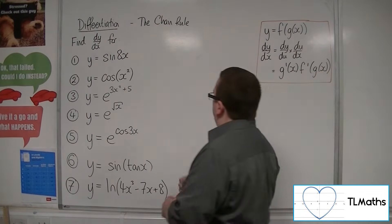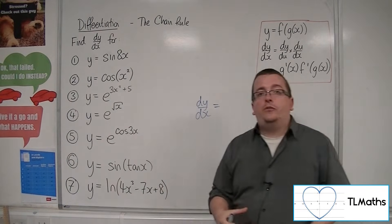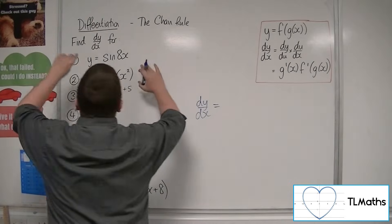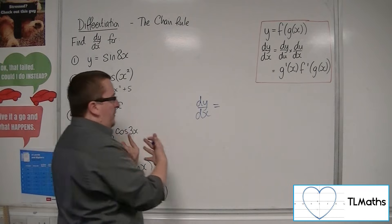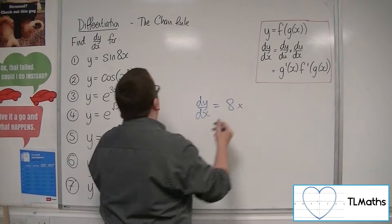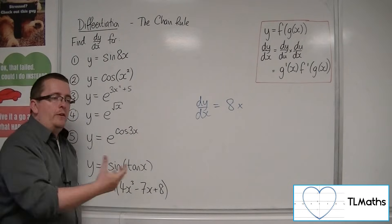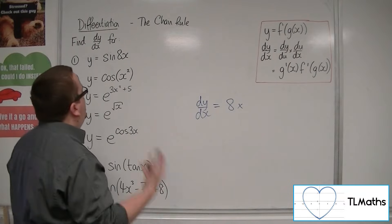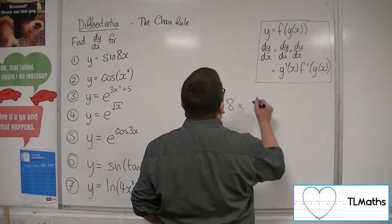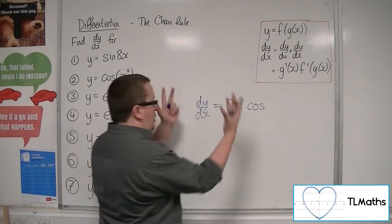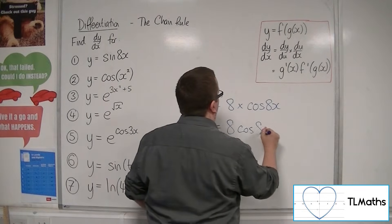First up, number one: y equals sine of 8x. The u here is the 8x — that's the function inside. The derivative of the inside comes outside, so that's 8. With sine, we know it differentiates to cosine. So we get 8 lots of cosine of u, the 8x. This gives us 8 cosine 8x.